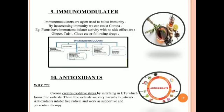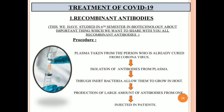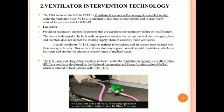Immunomodulators and antioxidants can be used as supportive treatments, as antioxidant radicals can be removed. Recombinant antibodies are one of the most important treatments for COVID-19. Ventilators are especially important for respiratory failure patients.